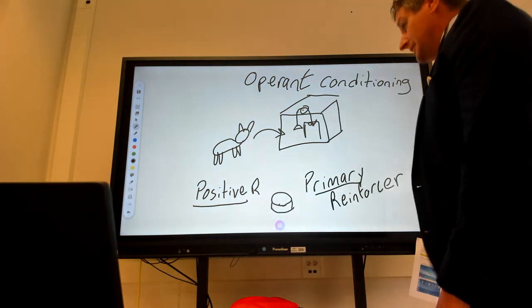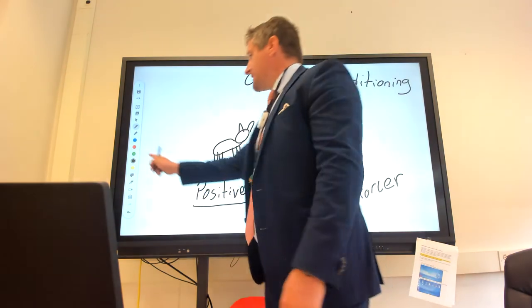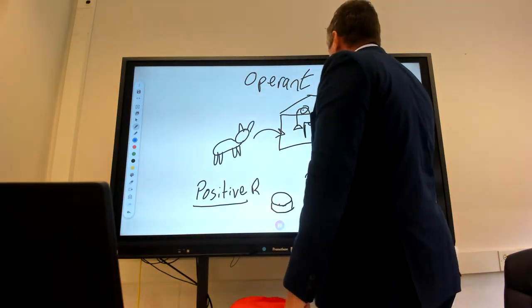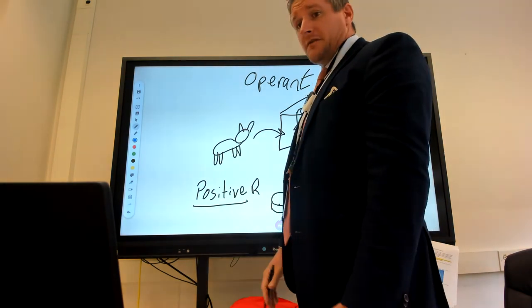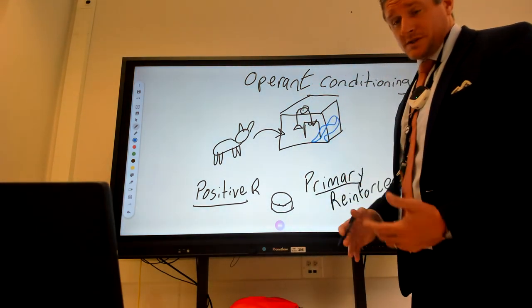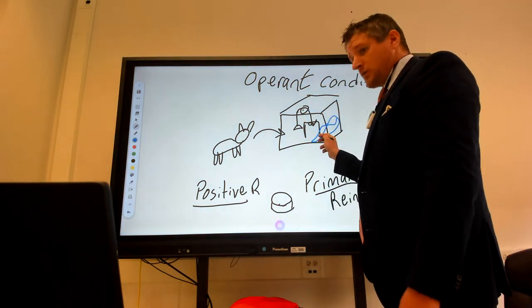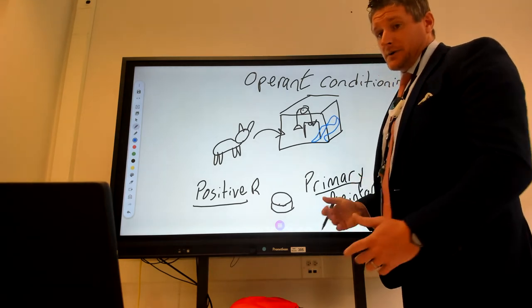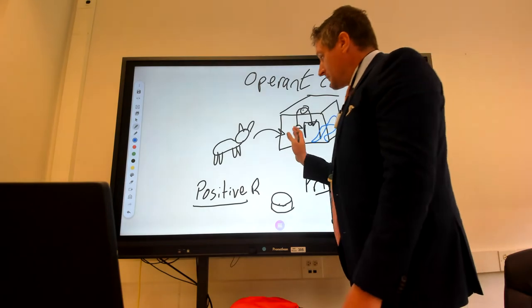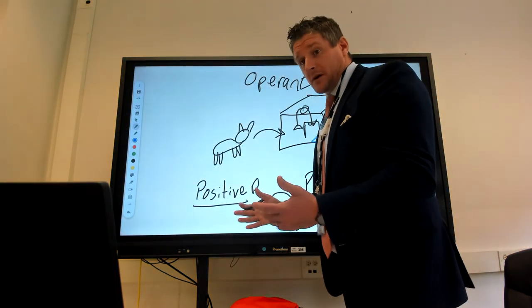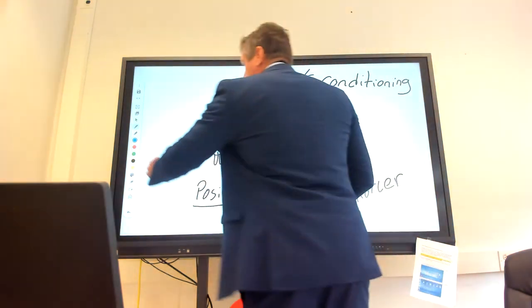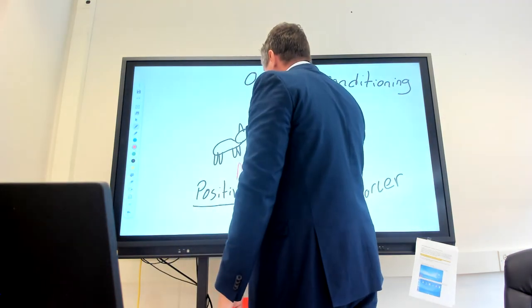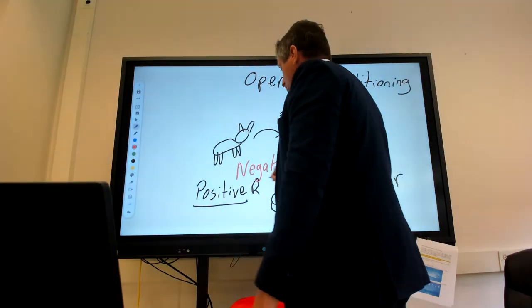Some of your classmates discussed another way to get the cat to want out of the box, and they said what if we take the box and we start to fill it up with water, forcing the cat towards the lever, and forcing the cat to want to escape. Cat does not like water, wants to escape from the water, cat wants out. That would mean when the cat got out, it got away from something it didn't like. We would call that a negative reinforcer.